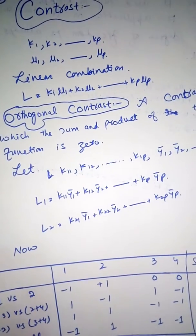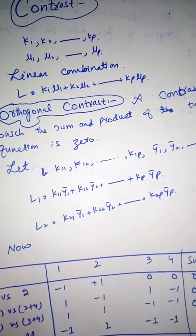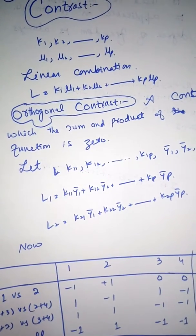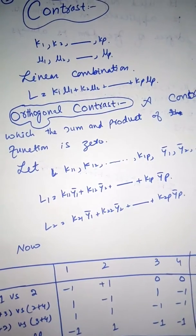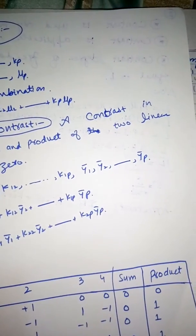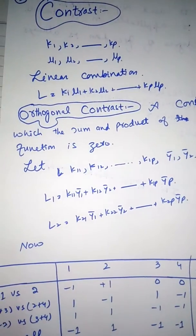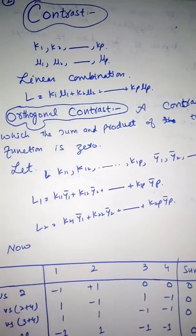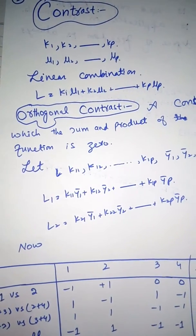Now, what is orthogonal contrast? Orthogonal basically means perpendicular, but here the orthogonal contrast is a contrast in which the sum and the product of the two linear functions is equal to zero.